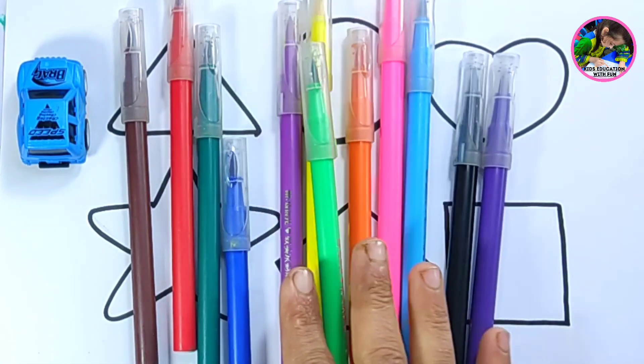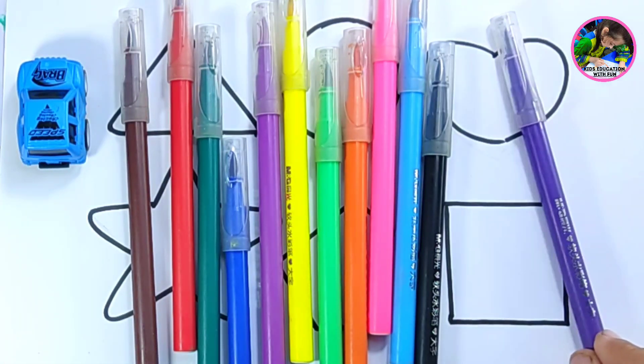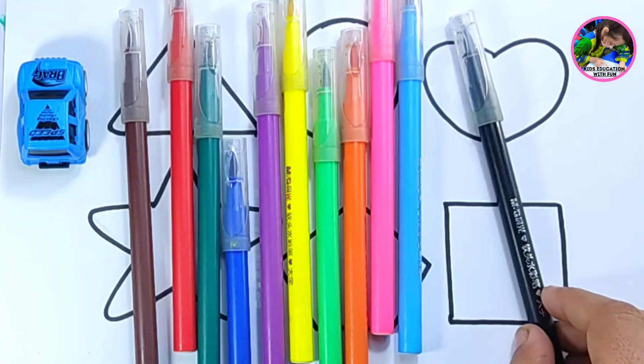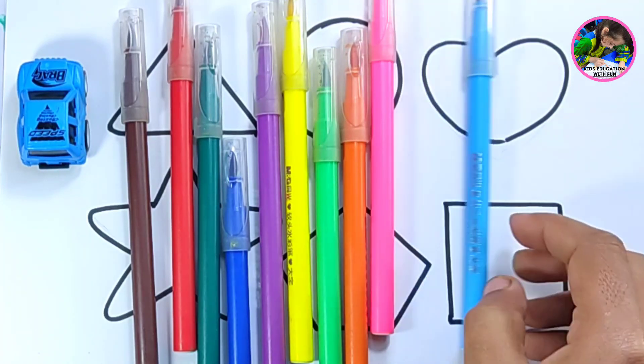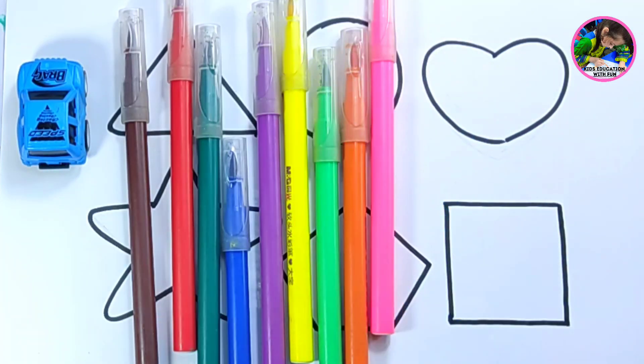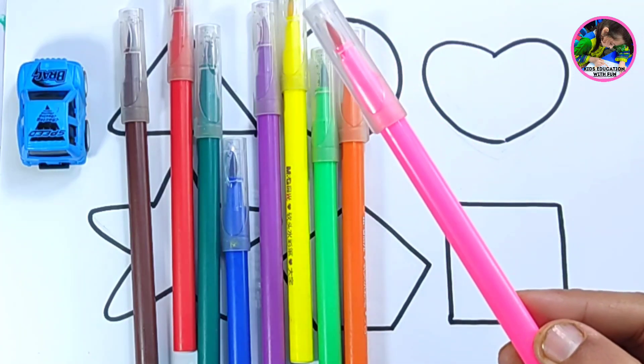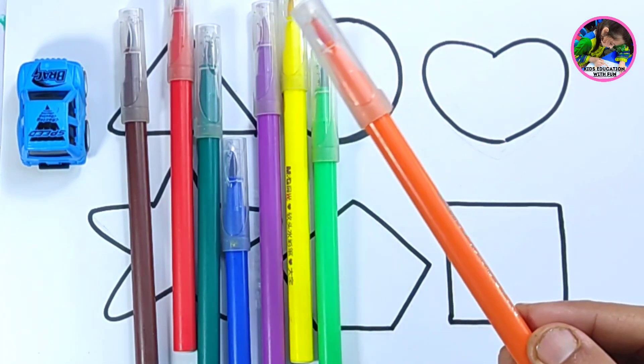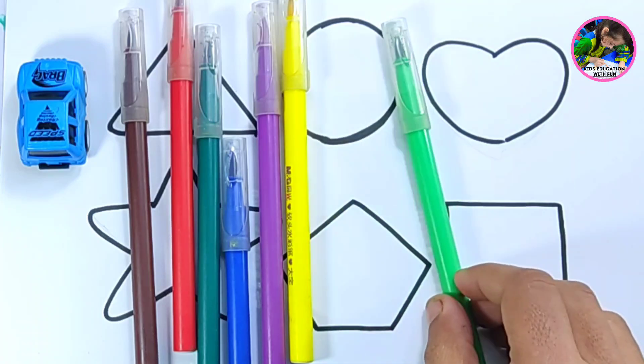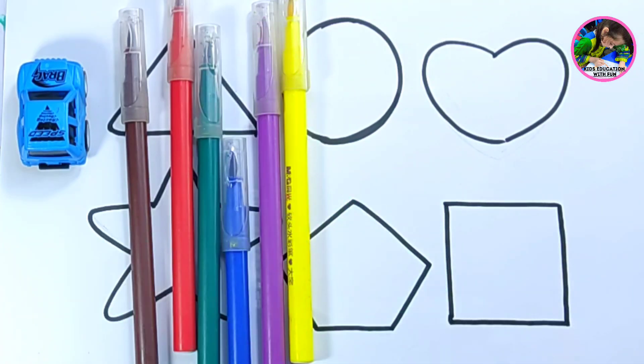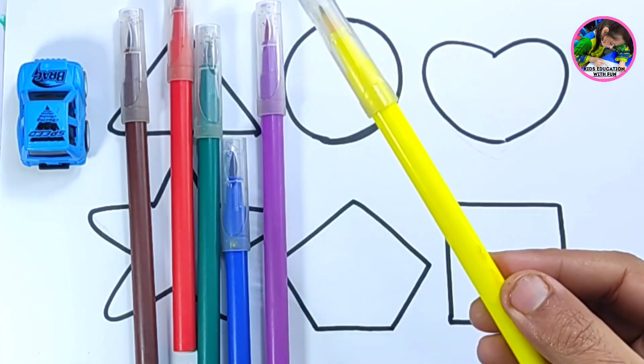Let's learn some colors. Violet color, black color, sky blue color, pink color, orange color, light green color, yellow color.